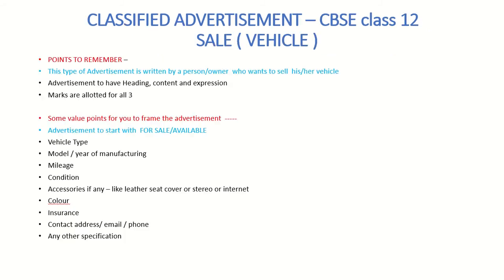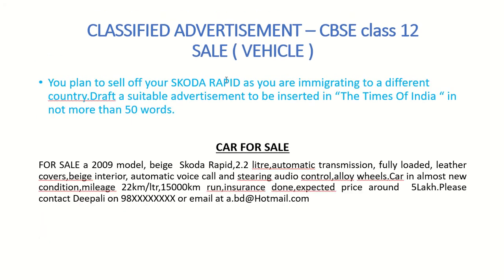Now let's look at the sale of a vehicle. This advertisement is written by a person or owner who wants to sell their vehicle. Heading, content, and expression are still required. The advertisement starts with 'For Sale' or 'Available.' Value points for a vehicle include: vehicle type, model and year of manufacturing, mileage, condition, accessories, color, insurance, contact address, and any other specifications. Covering all these points is sufficient to score full marks.